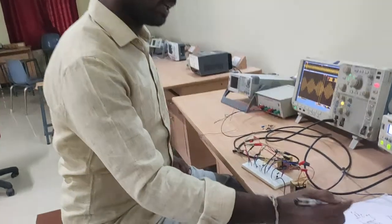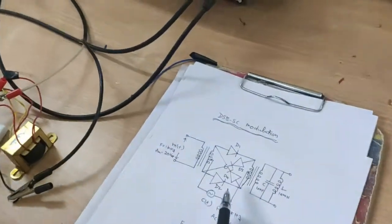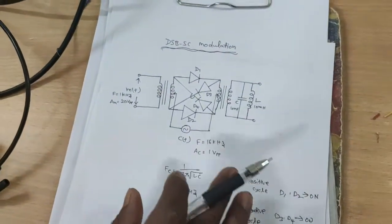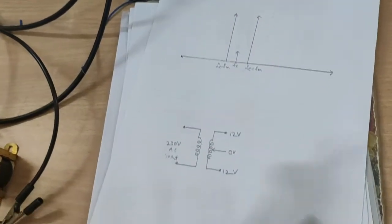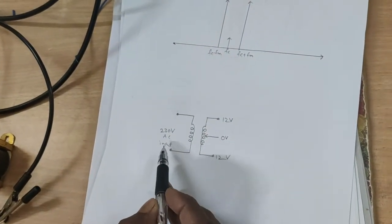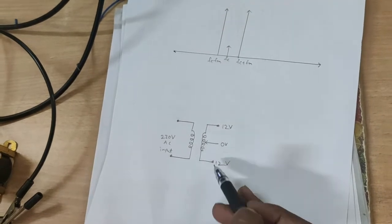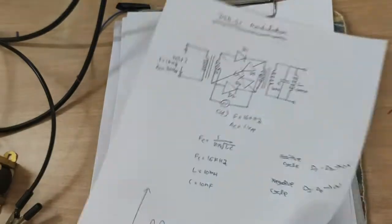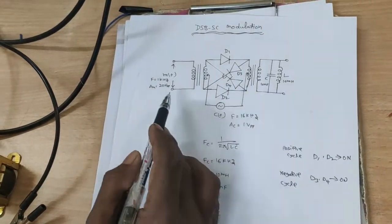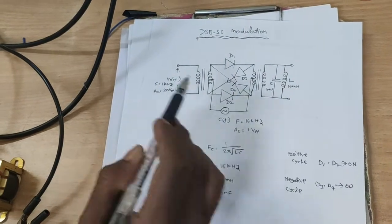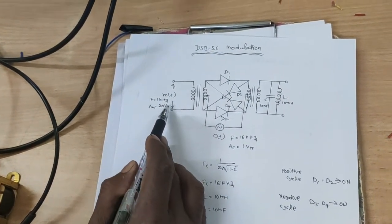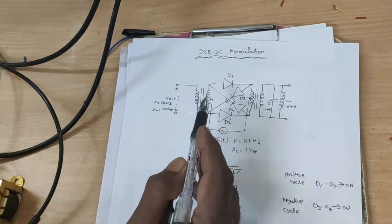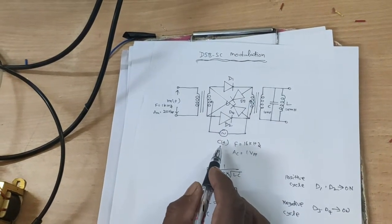This is the circuit diagram. The circuit diagram is a ring modulator, and here we are using two transformers. The transformer specifications are: input is 230 volts AC, output is 12-0-2 volts. We are using two signals — one is the message signal and another is the carrier signal. The message signal is connected to the primary winding of the first transformer.